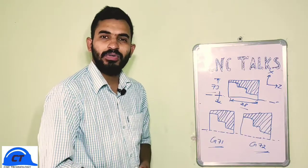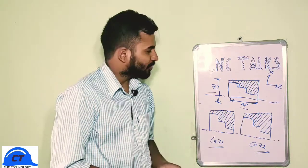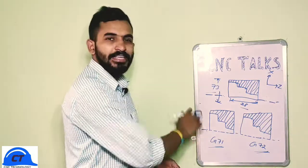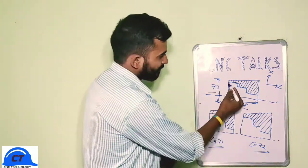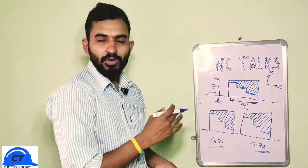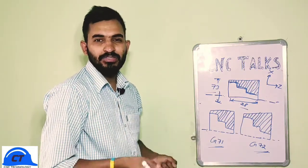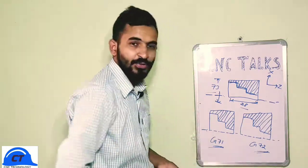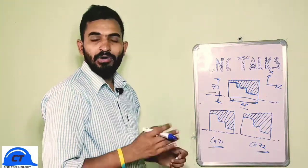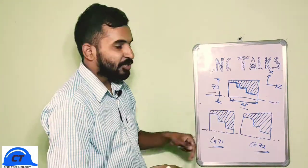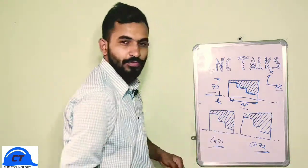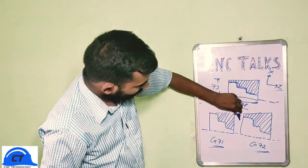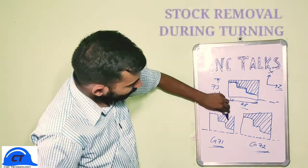Let's take an example of a cylindrical bar — a bar of length 28mm and diameter 73mm. We need to make a specific part out of this bar. There are basically two ways of doing it. If we use G71, our tool will remove the excess amount of material by moving in the Z direction, like this — which is called stock removal during turning.